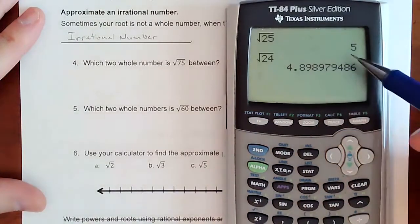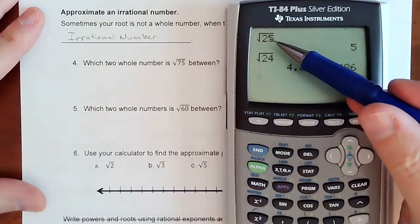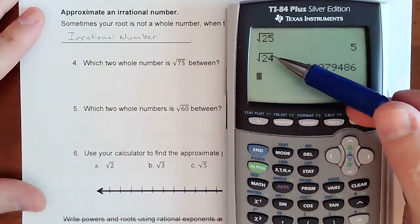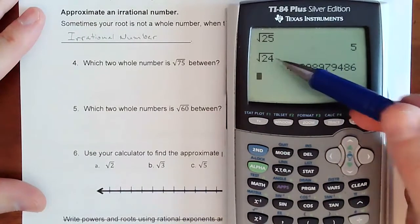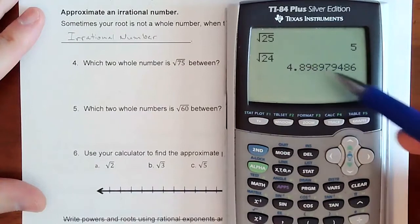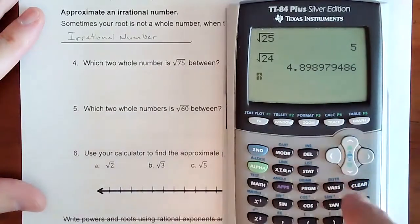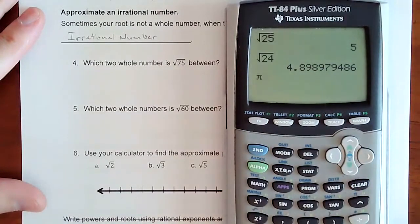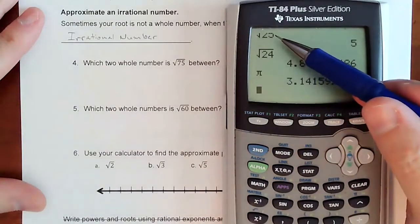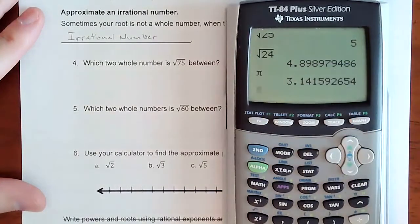So 25 is 5 because it's 5 times 5 equals 25. But 24, there is no two exact same numbers that multiply together that get 24 without doing this mess of a decimal. So this decimal is a decimal that never ends and never repeats. That's known as an irrational number. Your most common and popular irrational number is pi. That decimal never ends and never repeats. All square roots that are not perfect squares are going to be irrational numbers.